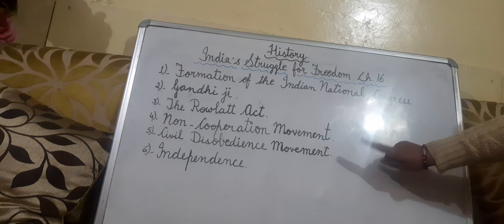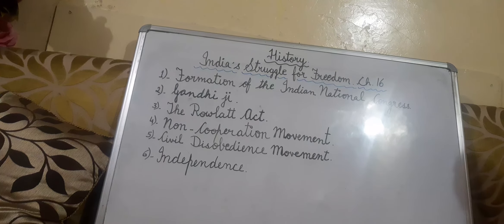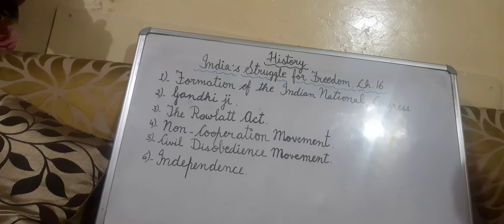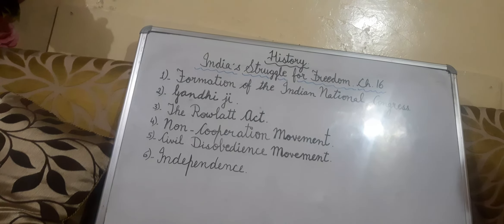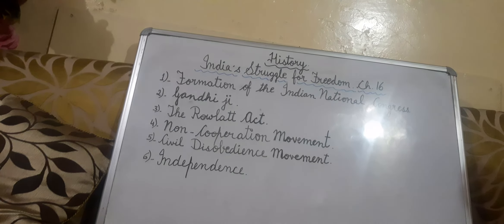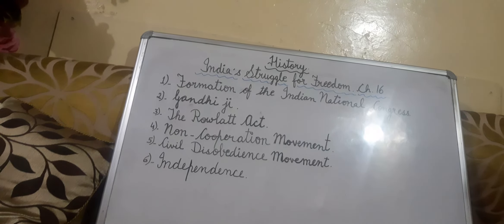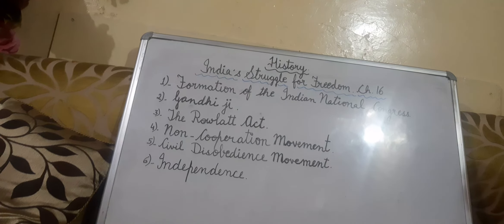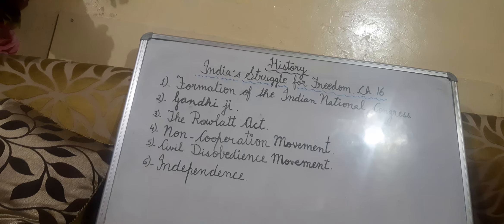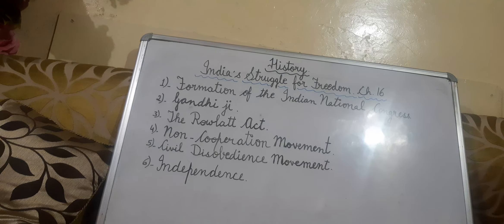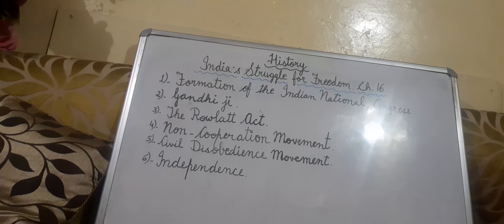Now we come to the Civil Disobedience Movement. Disobedience means not obeying. Gandhiji launched the Civil Disobedience Movement with the famous Dandi March. He marched with his followers from Sabarmati Ashram to Dandi in Gujarat and picked up a handful of salt to protest against British rule. By doing so, Gandhiji made it known that Indians would not obey the British. The Civil Disobedience Movement soon spread all over India, becoming very popular as people started protesting against British rule.